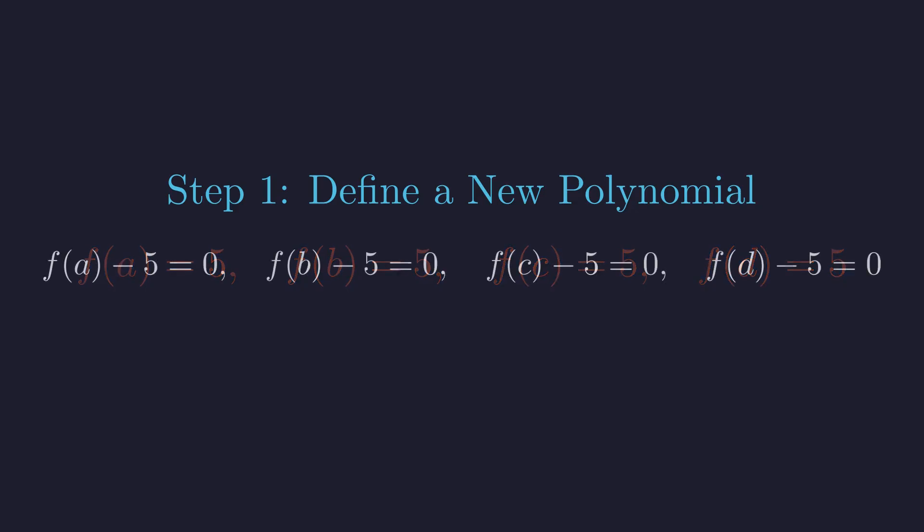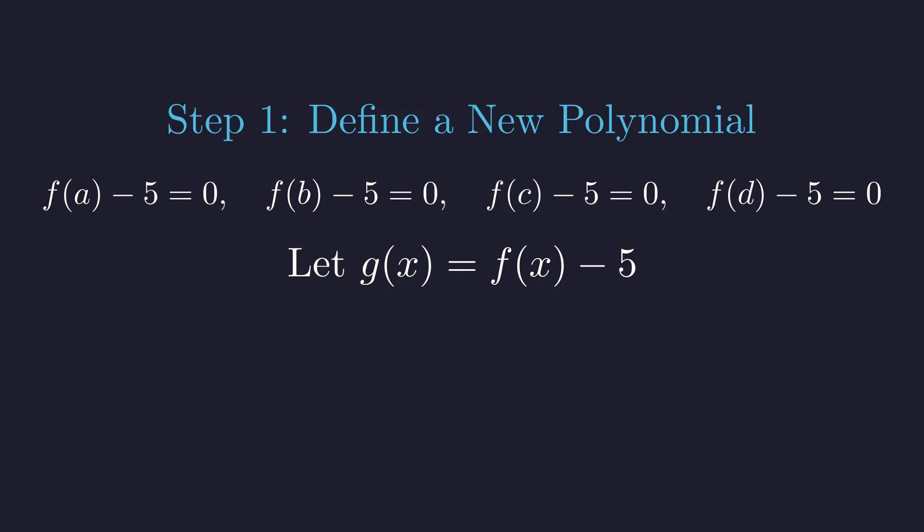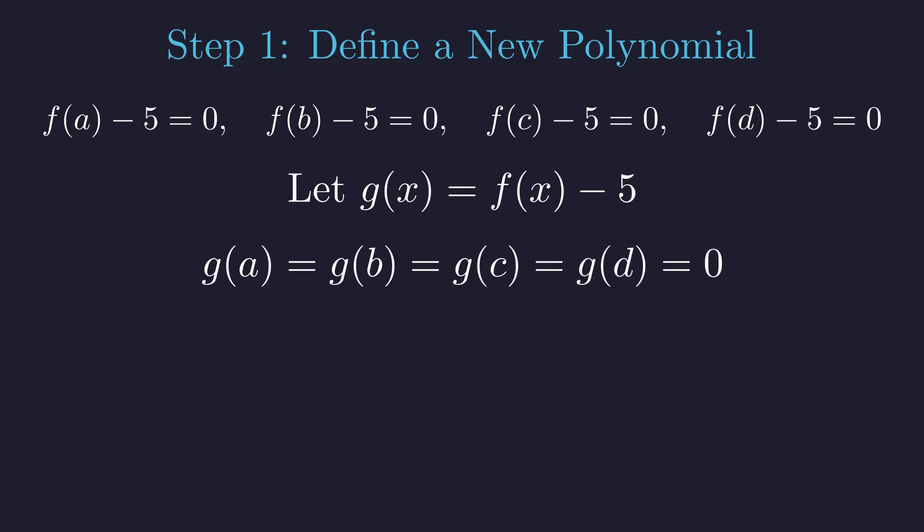So we define this new polynomial g of x to be f of x minus 5. Now something beautiful happens. At all four of our special x values, g evaluates to 0. Let me write this out clearly. We are defining g of x to be f of x minus 5. What this means is that a, b, c, and d are now roots of g, places where the polynomial equals 0.